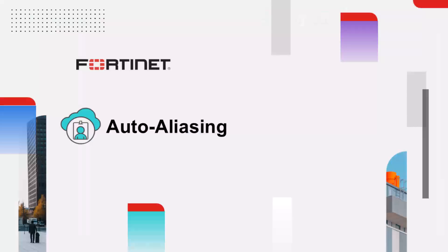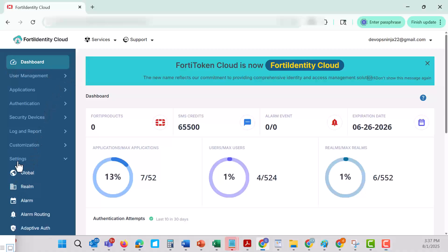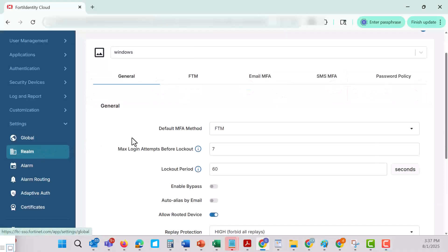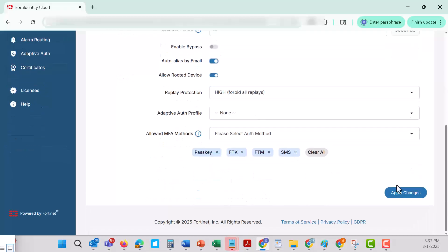Auto-aliasing is another powerful feature that allows a single user to use different usernames across multiple applications or domains within the same email address and token. This ensures only one token is assigned, even if the user has different usernames in different authentication clients. To enable this, go to Realm > General > Auto-Alias by Email in the portal. Note that alias users must belong to the same realm.